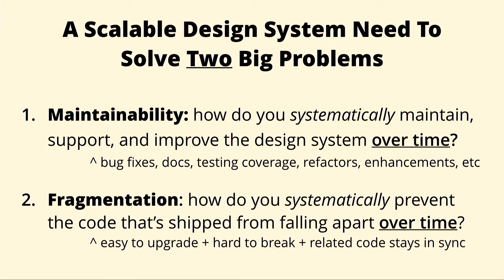Also, how do you deal with fragmentation? The design system's code — this collection of components, visual styles, tooling, etc. — is only useful if other teams, developers, designers, and content authors are actually using these things. Once you've shipped your code out into the real world, how do you ensure it doesn't start to fall apart at the seams? Because as we found out, if you can't update, your system is pretty much screwed.